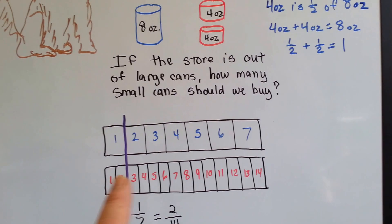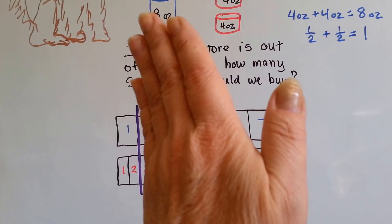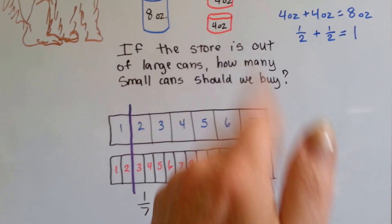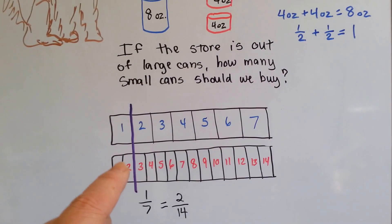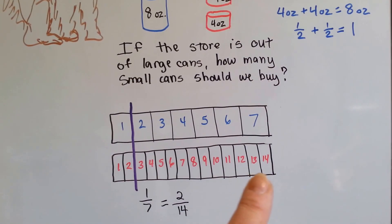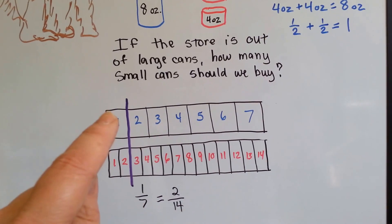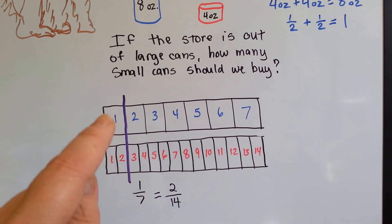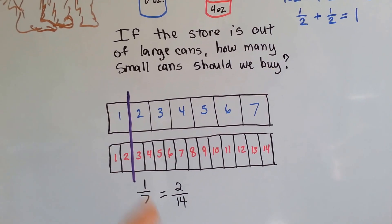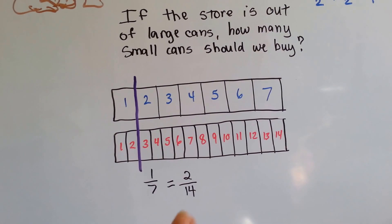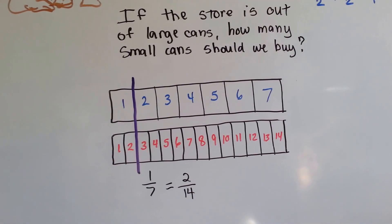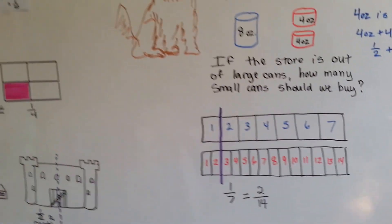So now here's the 14 little cans. Two of them is equal to one big can. See that? So she's going to eat two fourteenths every day instead of the one seventh of her weekly amount that she normally eats. So one seventh is equal to two fourteenths. Equivalent fractions.